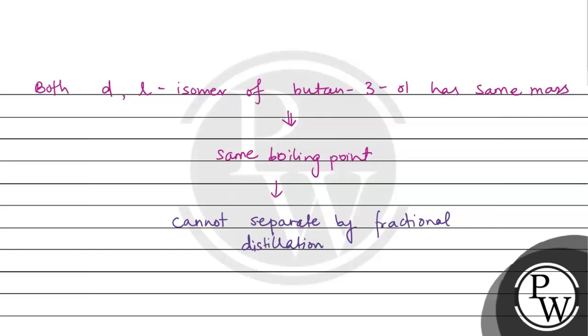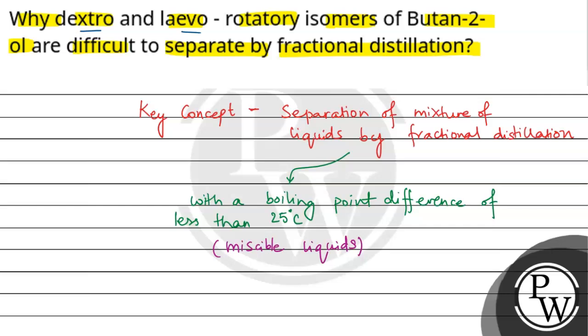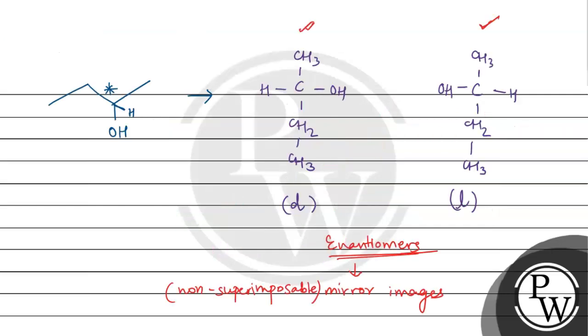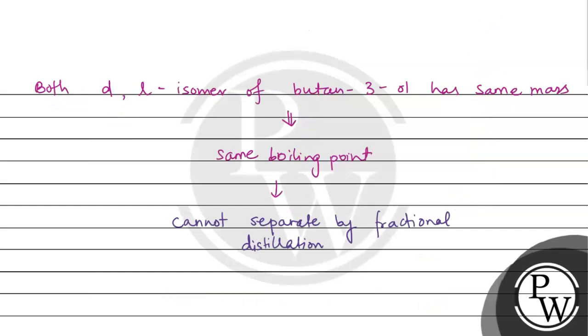The final answer for this question is that the dextro and levorotatory isomers of Butan-2-ol are enantiomers of each other, mirror images. Therefore they have the same molecular formula, same mass, same boiling point, so they cannot be separated by fractional distillation.